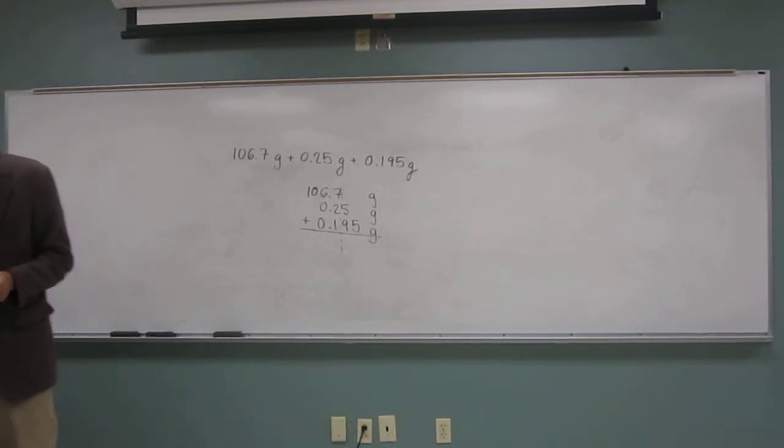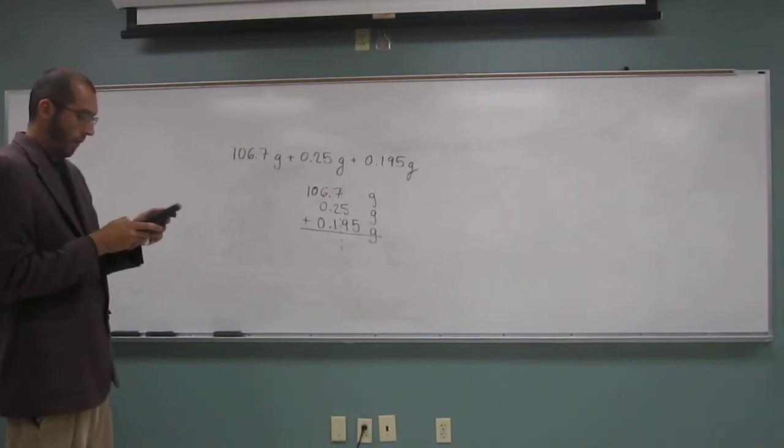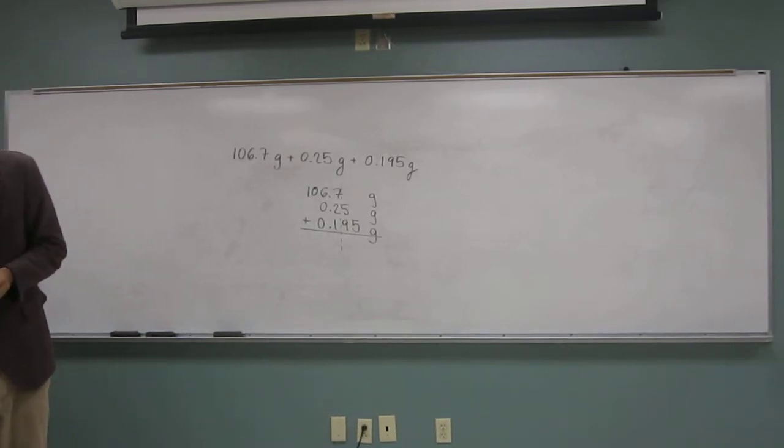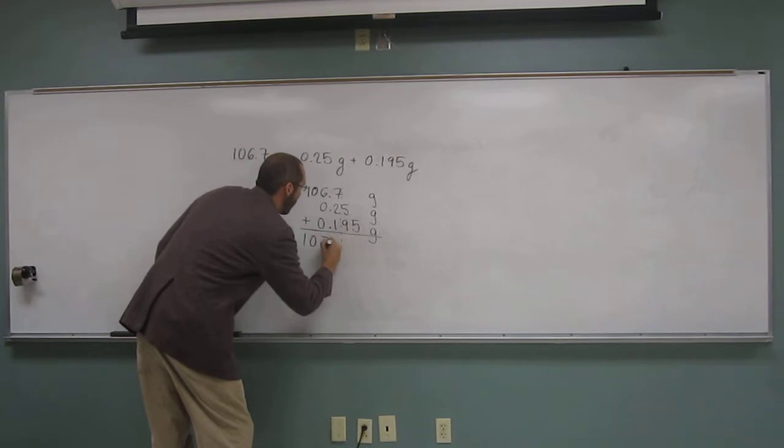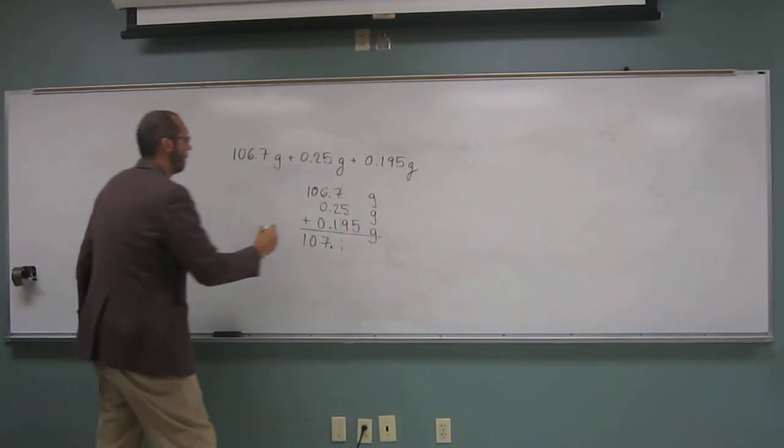Okay, so let's add this up. So I'm going to do this on my calculator, 106.7 plus 0.25 plus 0.195. Okay, when I do that, I get this number, 107.145.